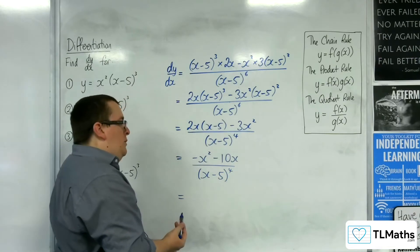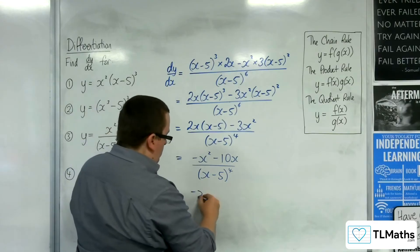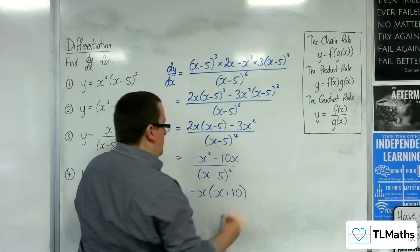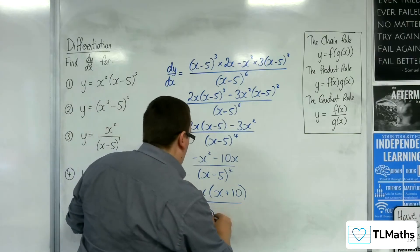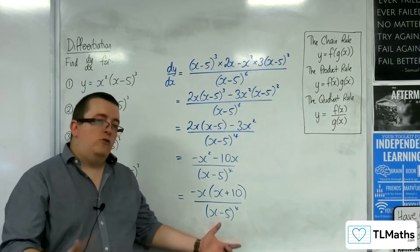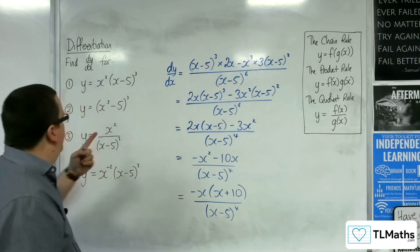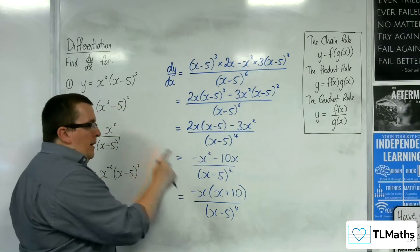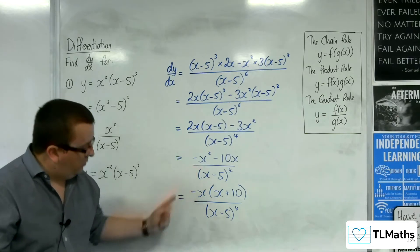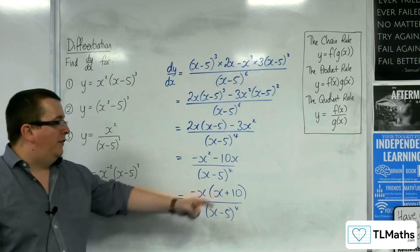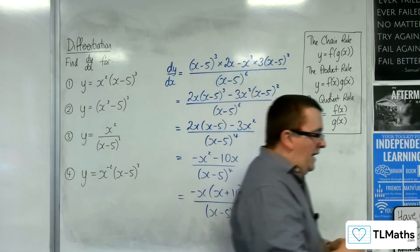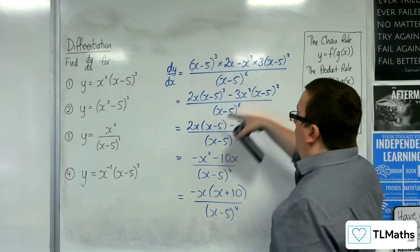Factoring out minus x from the numerator gives minus x(x plus 10) over (x minus 5) to the 4. If asked where the stationary points are, x equals 0 and x equals minus 10 make the numerator zero. So the quotient rule made short work of this, combining the fractions efficiently.